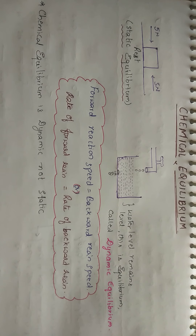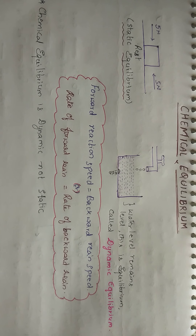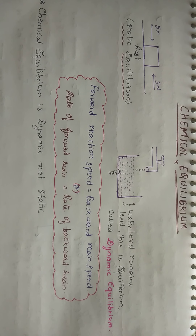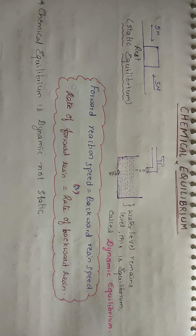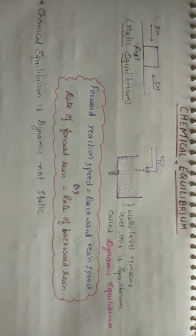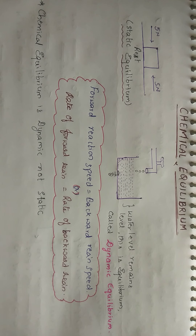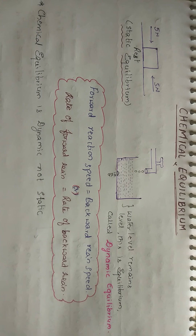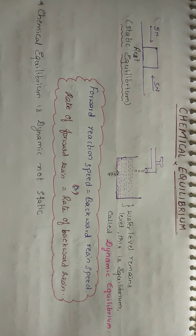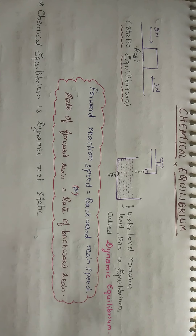Today we are going to start a new chapter which is called equilibrium. In equilibrium you have two parts: one is chemical equilibrium and another part is acids and bases. Those are the parts of equilibrium only. This week we will be covering chemical equilibrium, and next week we will go with respect to acids and bases. This is the syllabus for you this week.